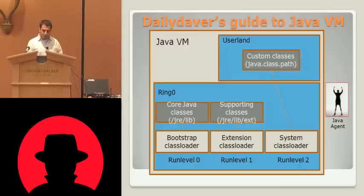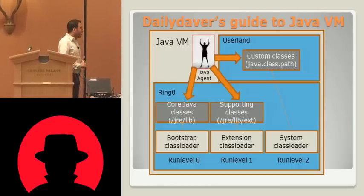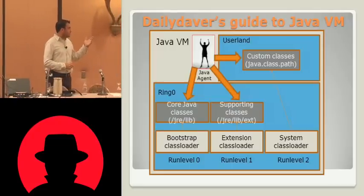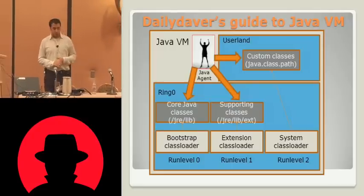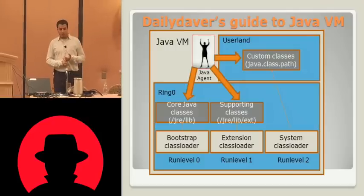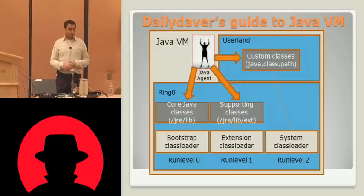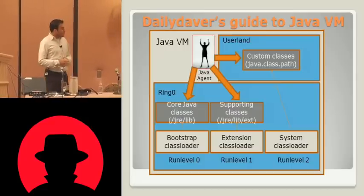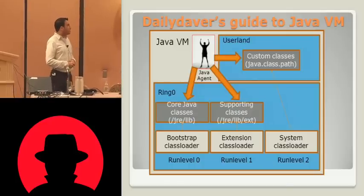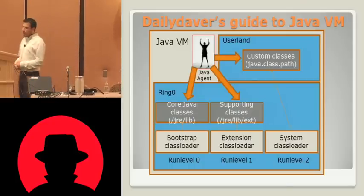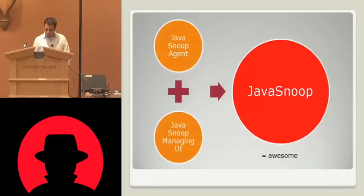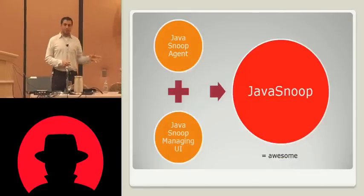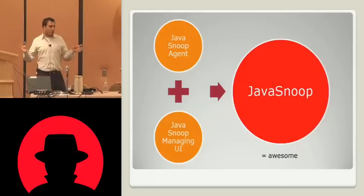Once we drop our little Java agent in, not only does he have access to the classes in user land — your custom classes — but he also has access to the trusted Java classes. So even if the code is signed, even if there's all kinds of Java security around the framework with policy files and all that stuff, Java Snoop will turn that off and use this agent to work with those classes. So those are the two big parts of Java Snoop: the agent that does the instrumentation, and the GUI that talks to it.